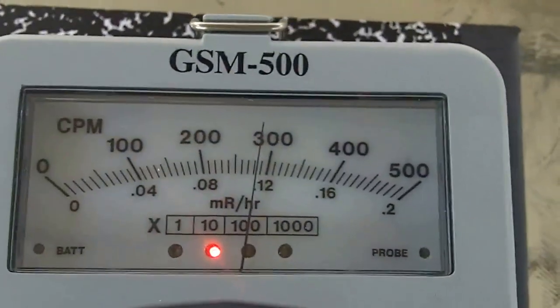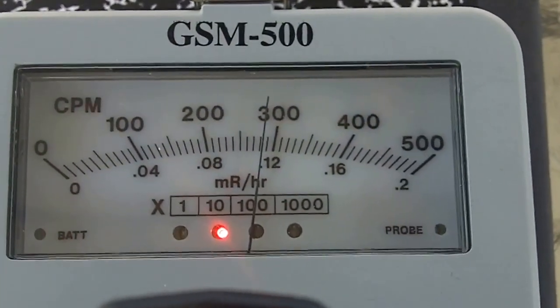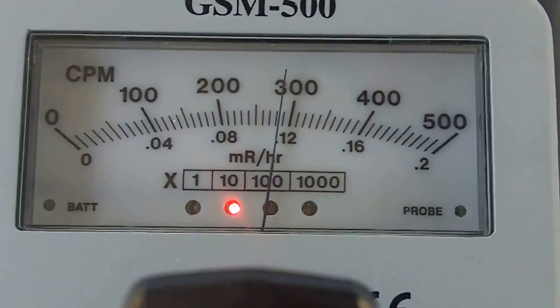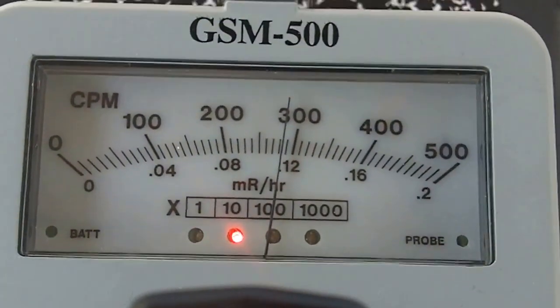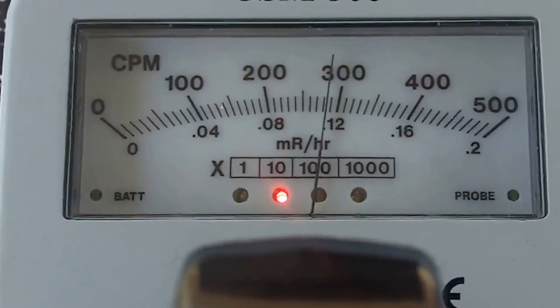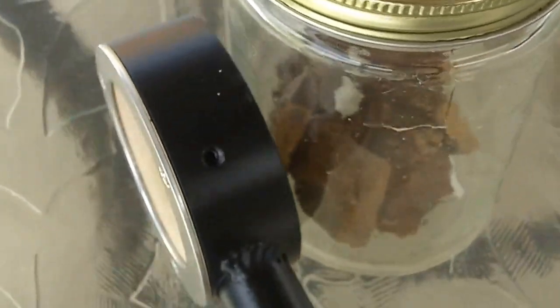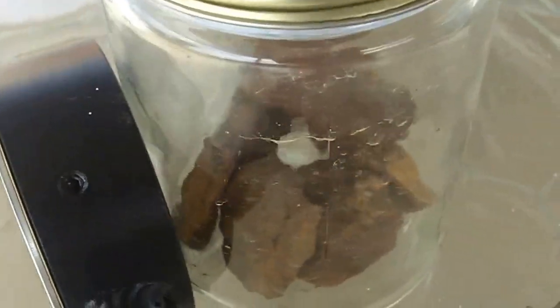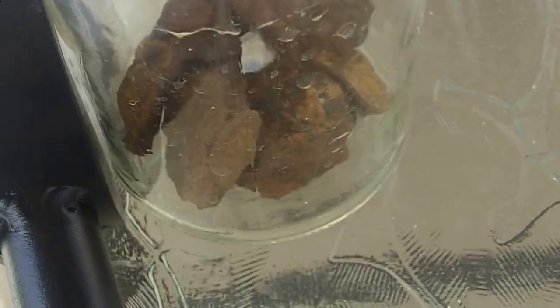So can get it to three thousand, but there's probably more. This is the Johnson WB Johnson GSM-500 survey meter with the pancake HP-265 measuring thorium rock. Hope you enjoy the video.